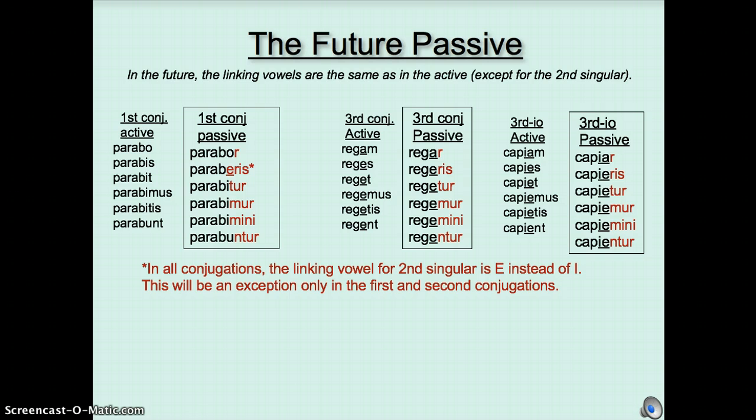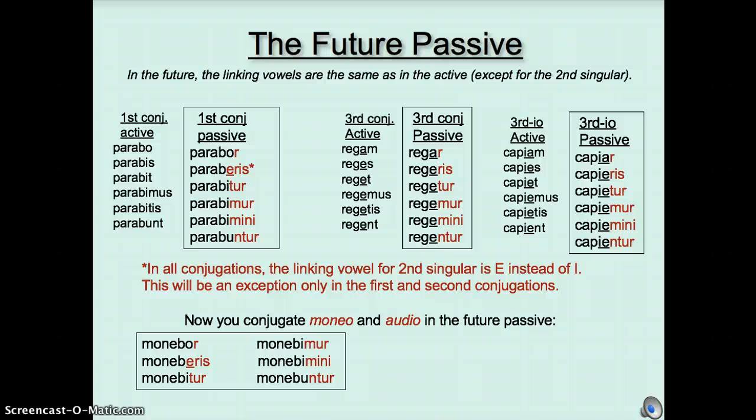So, the exceptions happen in the first conjugation and the second conjugation, in the second singular, right here, that is an e instead of an i. Otherwise, it's all the same as the active. Now, you try moneo and audio in the future passive. I'm going to show you moneo, so stop the video if you need more time. So, moneo goes monibor, moniberis, exception, monibitur, monibimur, monibimini, monibuntur.